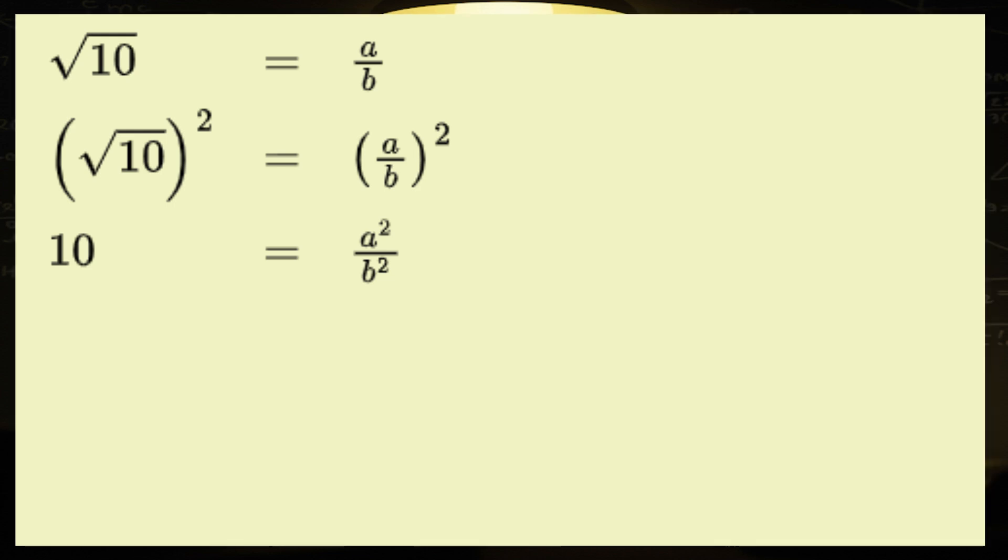Alright folks, it's time to eliminate that pesky square root like a true math superhero. To do that, we're going to square both sides of the equation, because when in doubt, just square it out. We end up with a squared over b squared equals 10. Now, let's make this equation work for us by multiplying both sides by b squared to get rid of that denominator, leaving us with a squared equals 10 b squared.